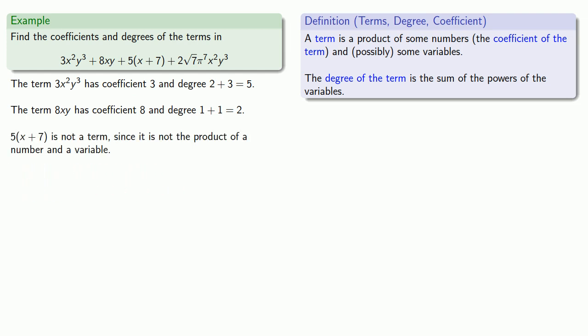The next thing, 2 square root 7 pi to the 7th x squared y cubed, is a product of some numbers and some variables, so it's a term. The coefficient is the number part, 2 square root 7 pi to the 7th. Remember, pi is itself a real number. And the variables are to power 2 and 3, so the degree is 2 plus 3, or 5.